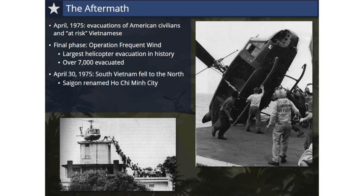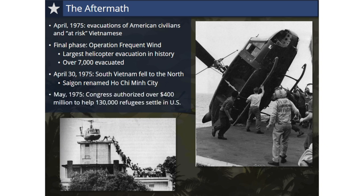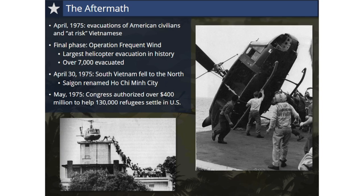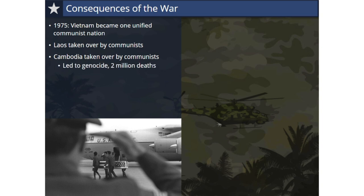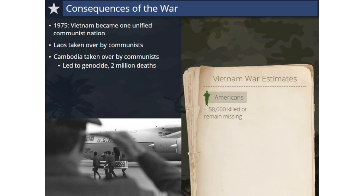The Communists renamed Saigon Ho Chi Minh City in honor of their former leader who had died in 1969. In May 1975, Congress authorized over $400 million to help 130,000 refugees from Indochina who had been evacuated during Operation Frequent Wind to settle in the United States. With South Vietnam's fall to the North in 1975, the country of Vietnam became one unified Communist nation. In late 1975, the Laos Communist Party, supported by the North Vietnamese, took control of the country. Cambodia was seized by the Communists called the Khmer Rouge, leading to one of the most deadly genocides in history, resulting in the deaths of 2 million Cambodians.